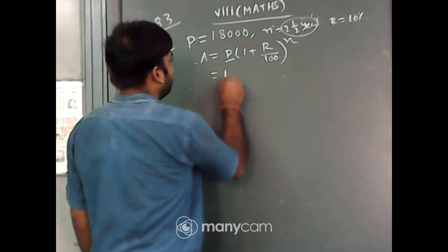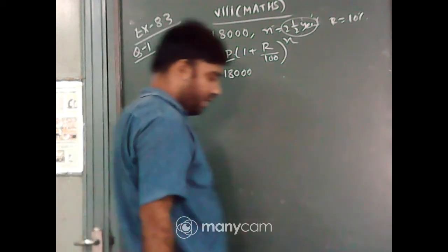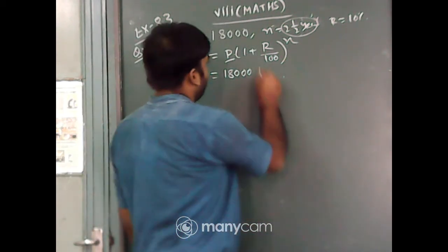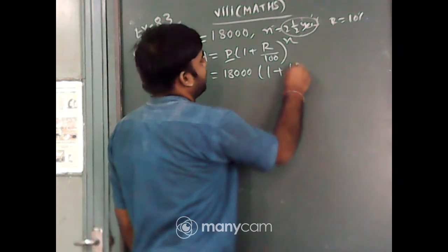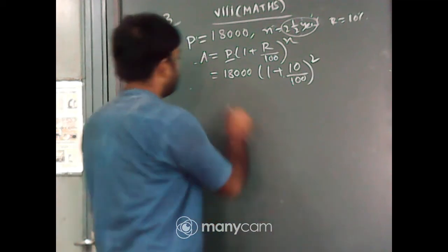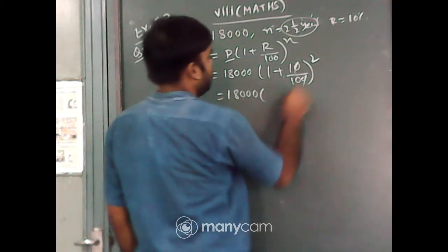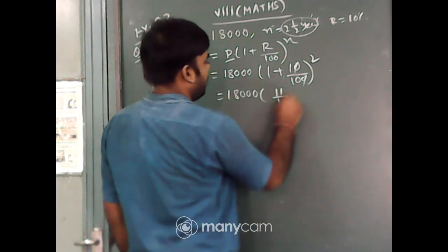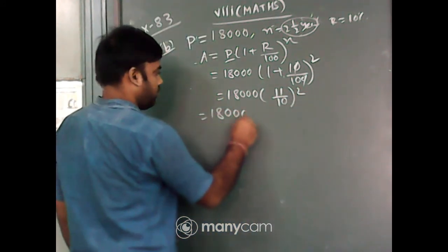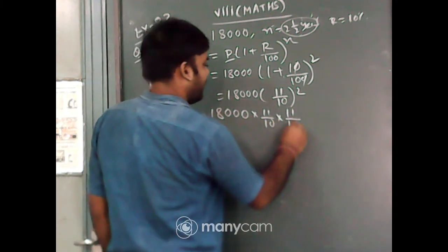So, P equals 18,000, that is 18,000 into (1 plus 10 by 100) to the power 2, which gives 18,000 into (11 by 10) into (11 by 10).